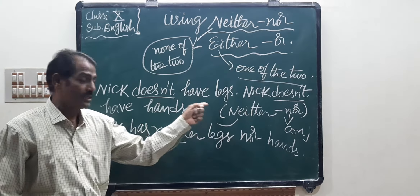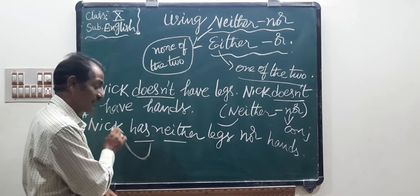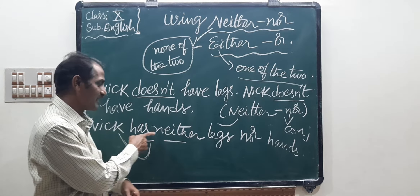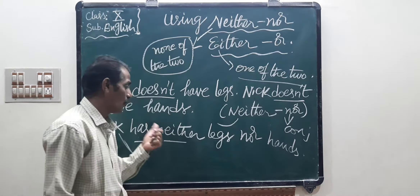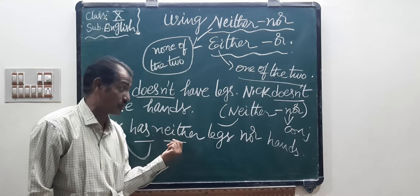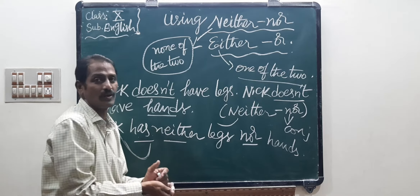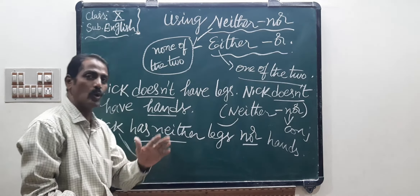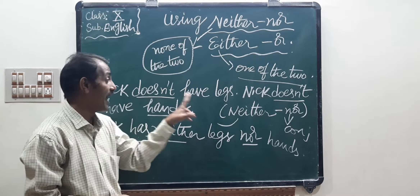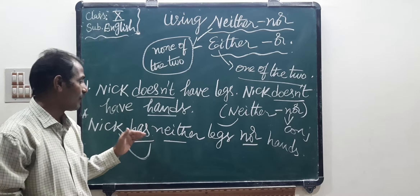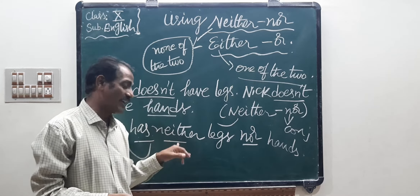Nick doesn't have legs. 'Doesn't' shows it's a negative sentence, so we use 'neither.' Nick is third person singular, so we write 'has' instead of 'have.' Nick has neither legs. For the next sentence, since the subject Nick is already written, we need not repeat it. 'Doesn't have' is replaced by 'neither,' and the remaining word is 'hands.'